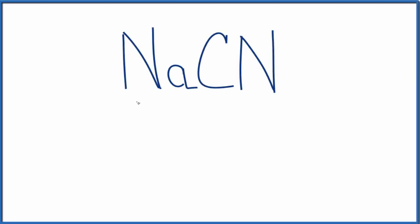In this video we'll write the Lewis structure for sodium cyanide. The first thing we need to recognize is we have sodium, that's a metal, and then the CN. This is the cyanide ion, a polyatomic ion.